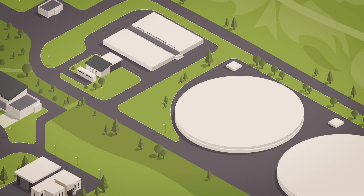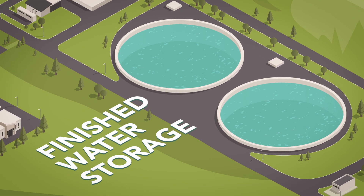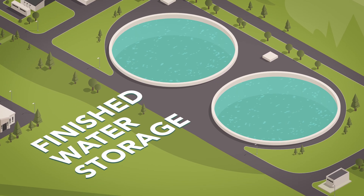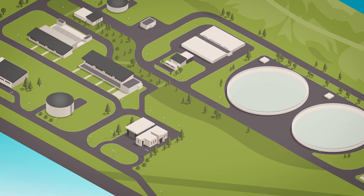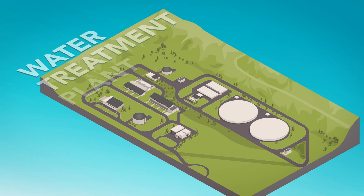This process also protects the water as it moves through pipes in the city. The water is then stored in the finished water tanks. The tanks are enclosed and the water meets all state and federal drinking water regulations. From here, the water is sent out to Denver Water customers.